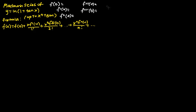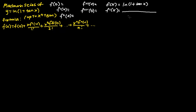We start off by finding f(x). So we let f(x) equal ln(1 plus tangent x), and if we differentiate the function one time, we get the following: 1 over (1 plus tangent x), and we differentiate (1 plus tangent x) in the numerator to get sec squared x.